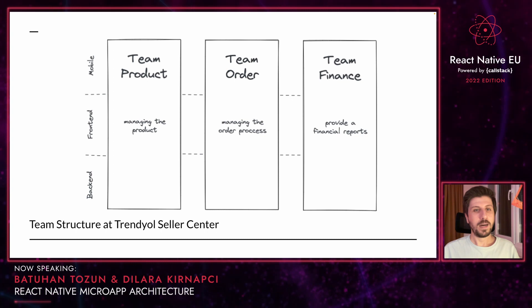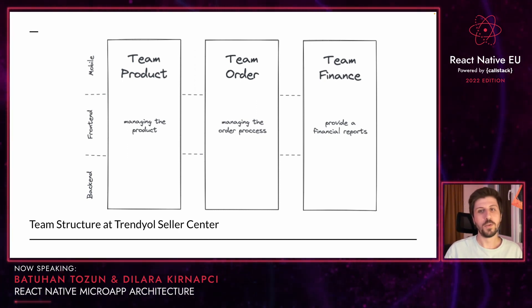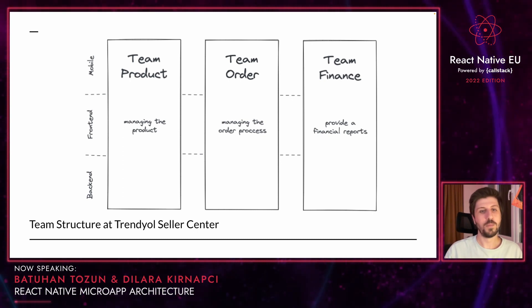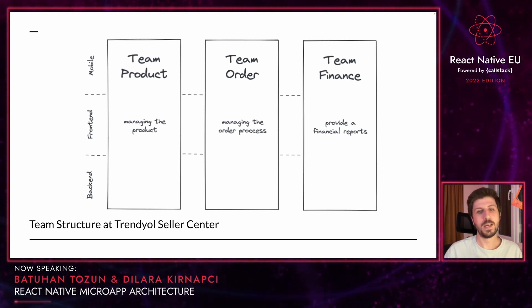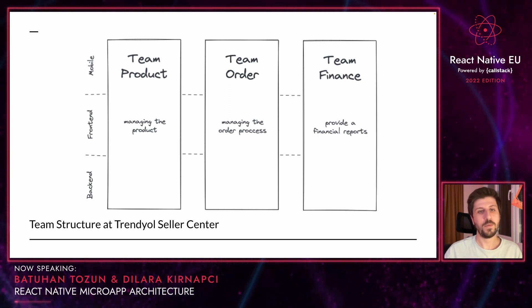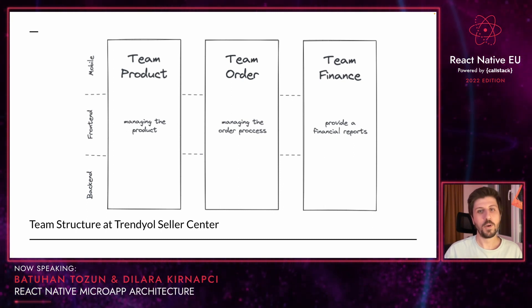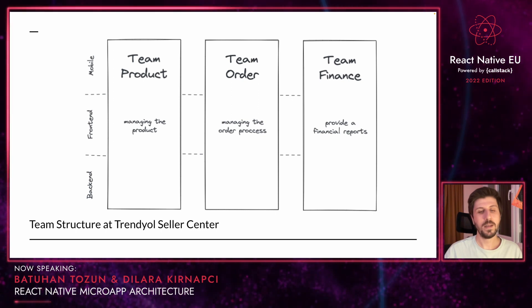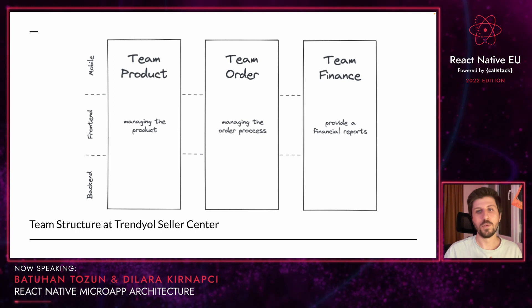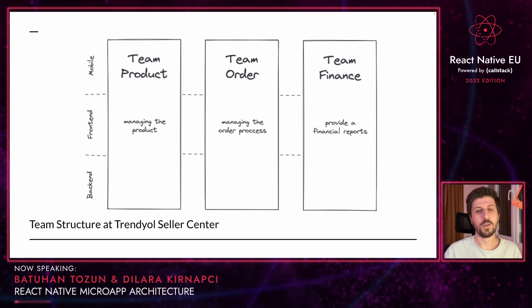Let's take a look at our team structure. In Trendyol tech, our goal is to create a scalable organization with autonomous, decoupled, and small teams. We are divided into multiple entities called tribes, and all tribes have a couple of teams. You can think of each team as a fully functional and independent startup. We are scaled vertically at Seller Center, and each product team has back-end, front-end, and mobile developers working on a set of features for a specific domain.